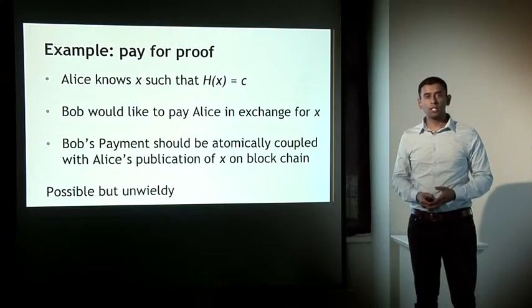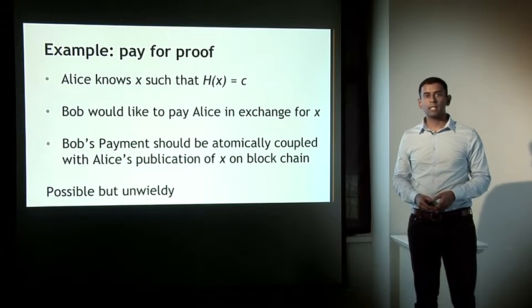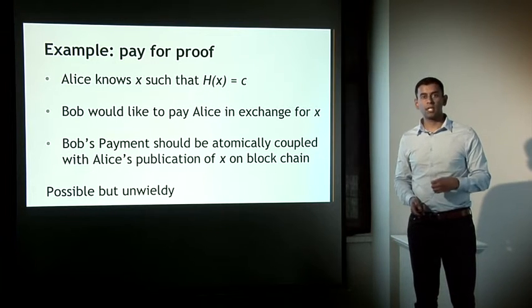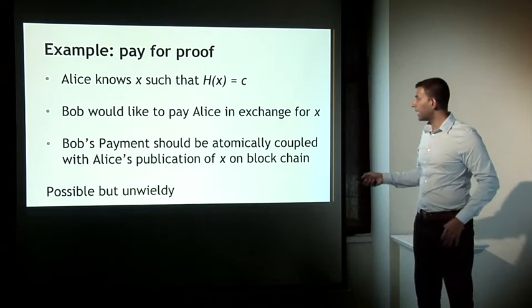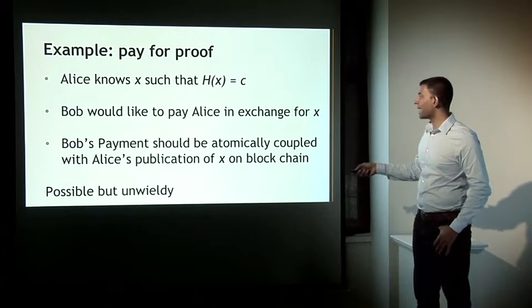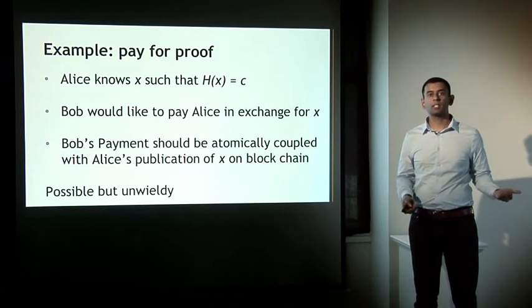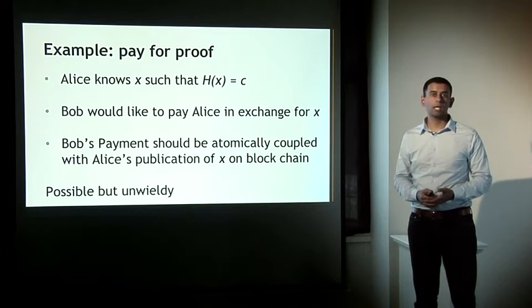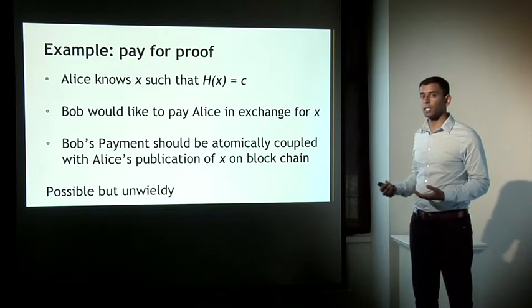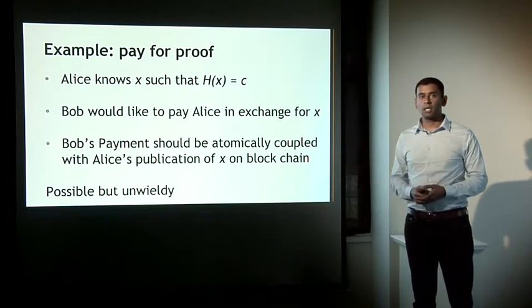Security is a problem here — this transaction happens over the internet. We want to make sure that if Bob pays Alice, then Alice is necessarily forced to transfer knowledge of x to Bob. One way to achieve that is to atomically couple Bob's payment with Alice's publication of x onto the blockchain. She's not secretly sending x to Bob but publishing it onto the blockchain — which may be acceptable to Bob. This can be accomplished, but it starts to get quite unwieldy with regular Bitcoin.